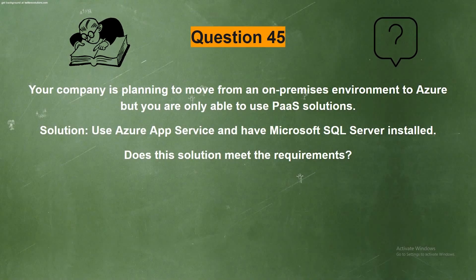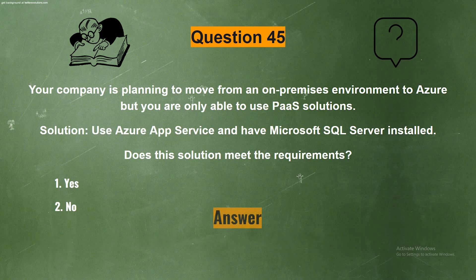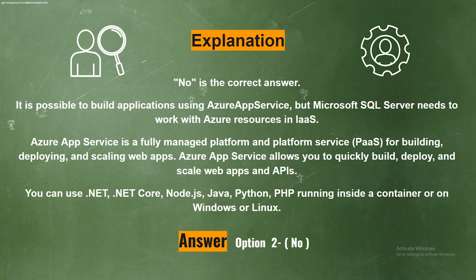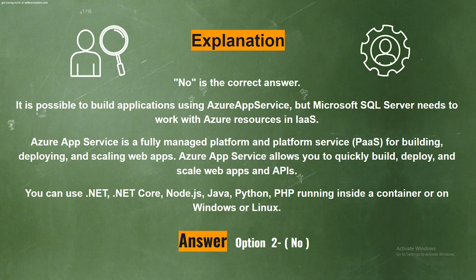Next question. Your company is planning to move from an on-premises environment to Azure, but you are only able to use PaaS solutions. Solution: Use Azure App Service and have Microsoft SQL Server installed. Does this solution meet the requirements? The options are: Option 1: Yes. Option 2: No. The correct answer is Option 2: No. It is possible to build applications using Azure App Services, but Microsoft SQL Server needs to work with Azure resources in IaaS.